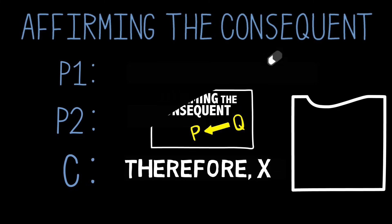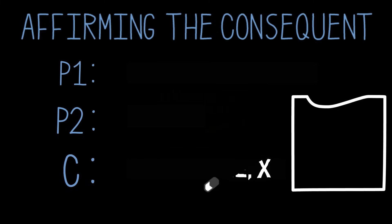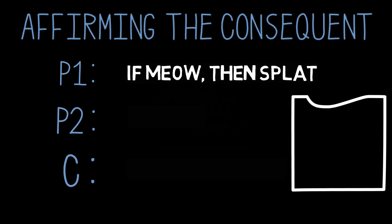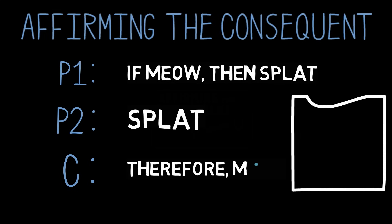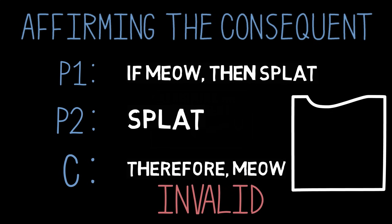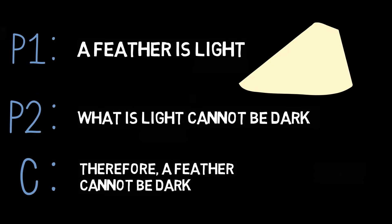So anything can be plugged into these bad argument forms and the argument would be invalid. For instance: if meow, then splat. Splat, therefore meow — is invalid. Now that we have a general understanding of formal fallacies, what about informal ones? Let's look at our other example from the beginning of this video. Notice that this fallacy arises out of the content of the argument, not out of the form.